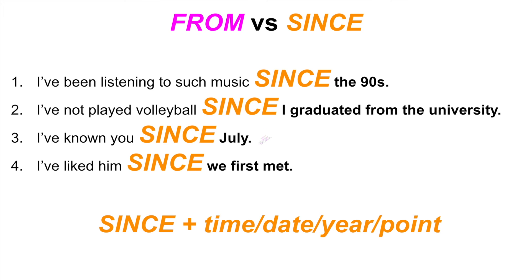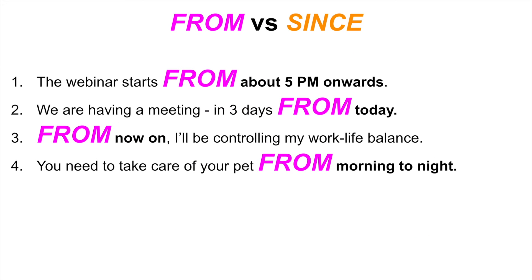'The webinar starts from about 5 p.m. onwards' — here I don't indicate the duration, I just indicate the starting position of the program. 'We are having a meeting in three days from today' — I show not the duration but that the meeting starts in three days from today, counting today as Friday, so probably on Sunday we are going to meet. 'From now on I'll be controlling my work-life balance' — this is a set expression indicating the start point of an activity.